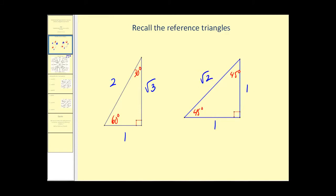Just to refresh your memory, when we have the unit circle, the radius of this circle is equal to one. So if we sketch an angle in standard position and sketch our reference triangle, the hypotenuse of this triangle would equal one unit.